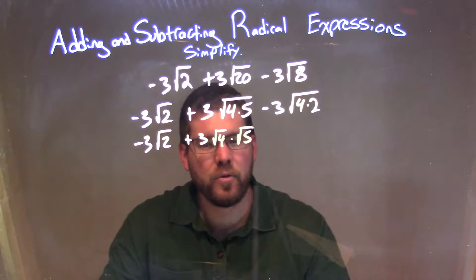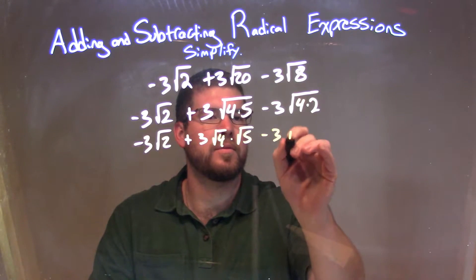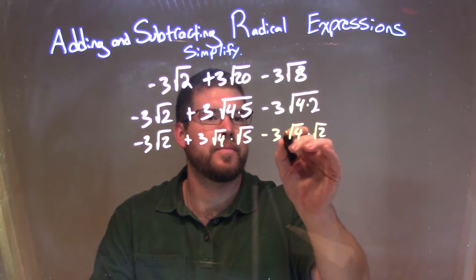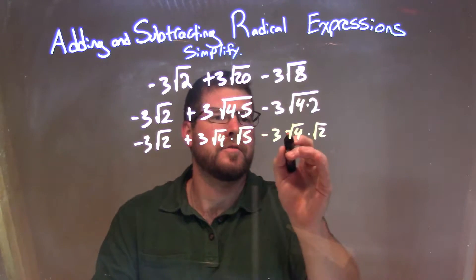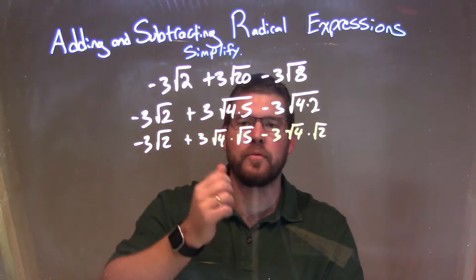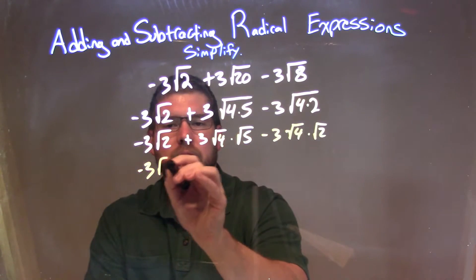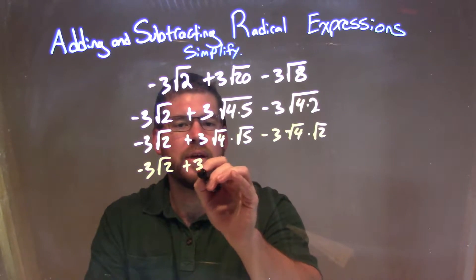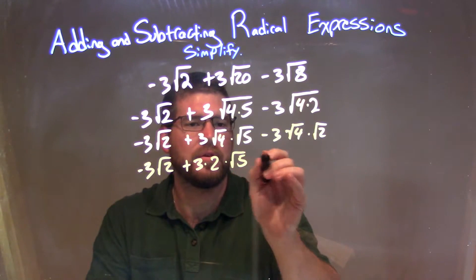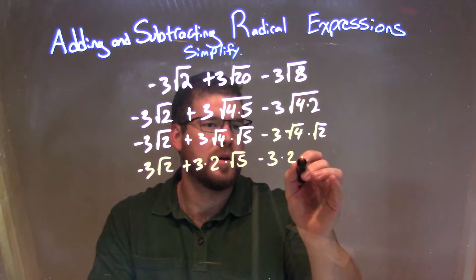If it's multiplication inside a square root, you can separate it out between square roots being multiplied. So we have minus 3 times the square root of 4 times the square root of 2. Then we simplify the square roots that we can: we have negative 3 square root of 2, plus 3 times the square root of 4 — which is 2 — times the square root of 5, minus 3 times the square root of 4 — which is 2 — times the square root of 2.